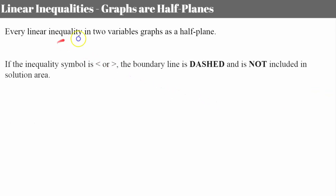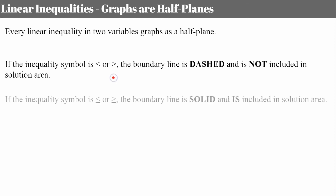Every linear inequality in two variables graphs as half of a plane. If the inequality symbol is strictly less than or greater than, the boundary line will be dashed, since the line itself is not included — values are either less than or greater than. If the inequality symbol is less than or equal to, or greater than or equal to, we use a solid boundary line, and any point on the line is part of the solution area because it can be equal to.